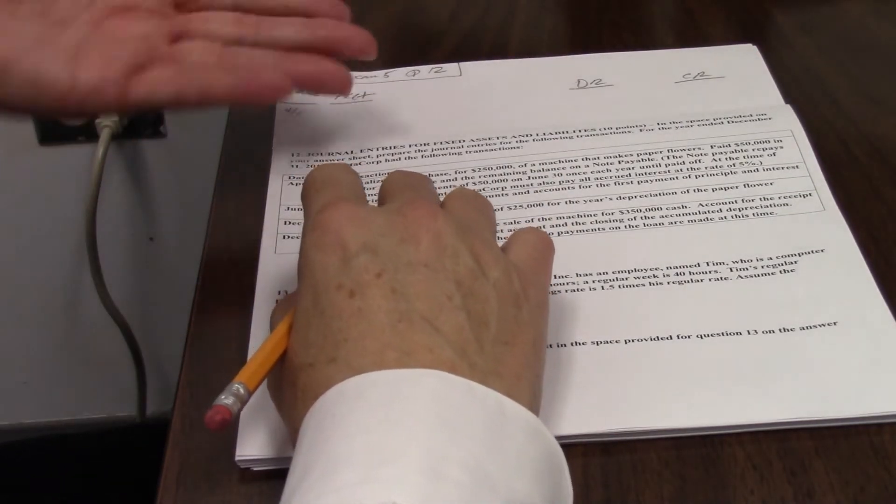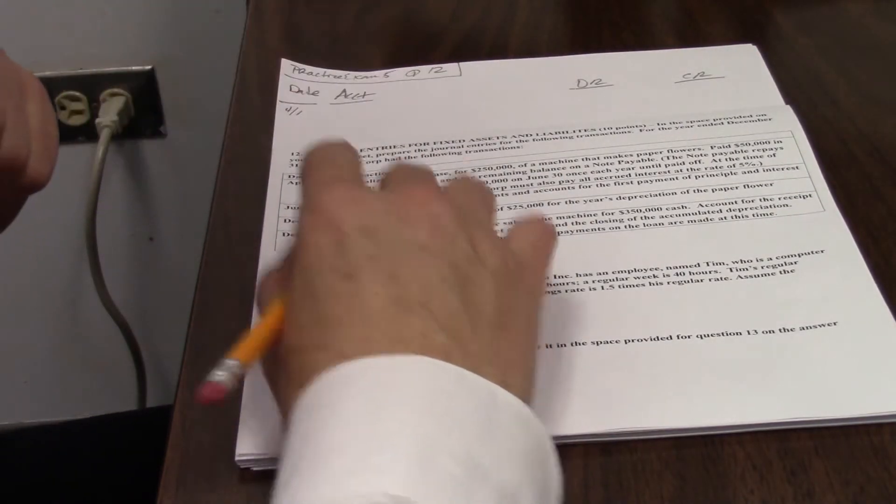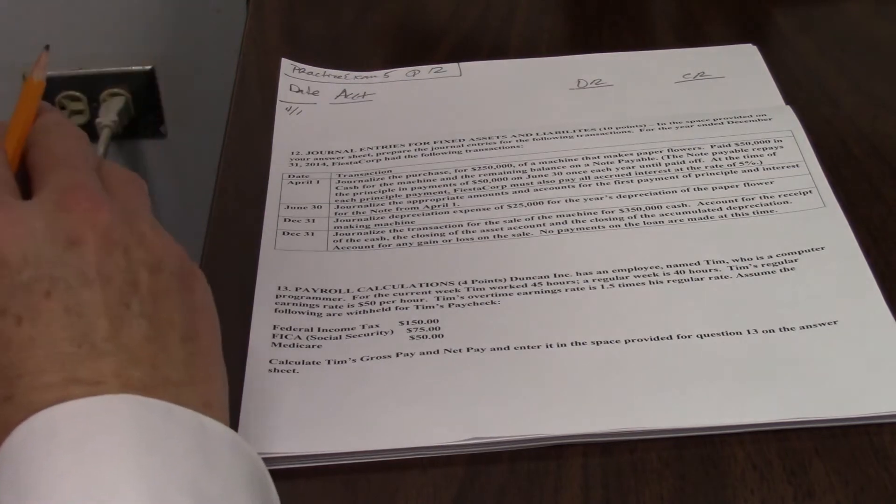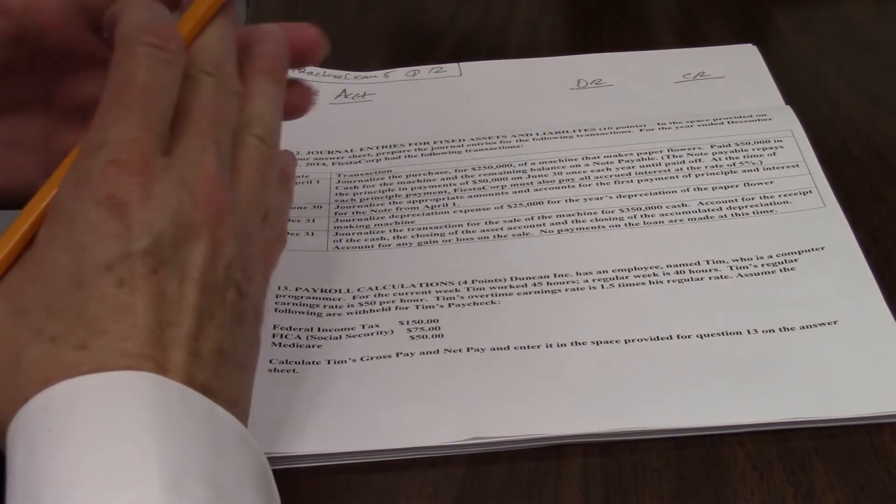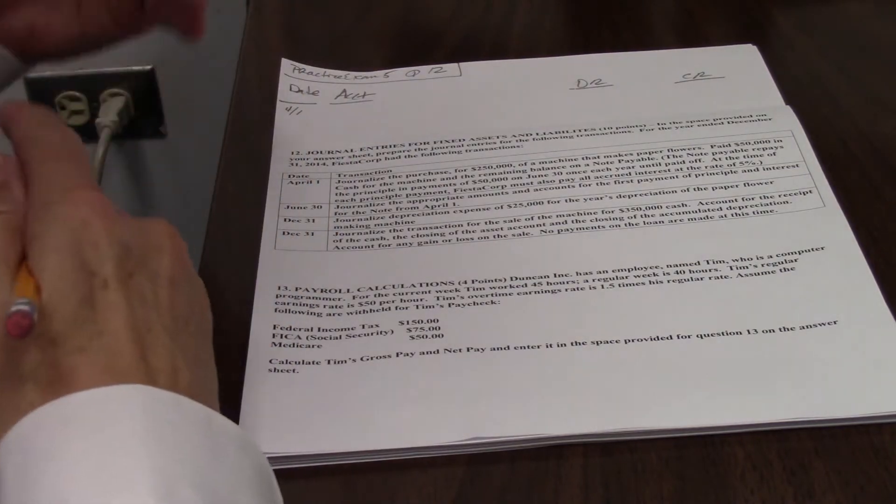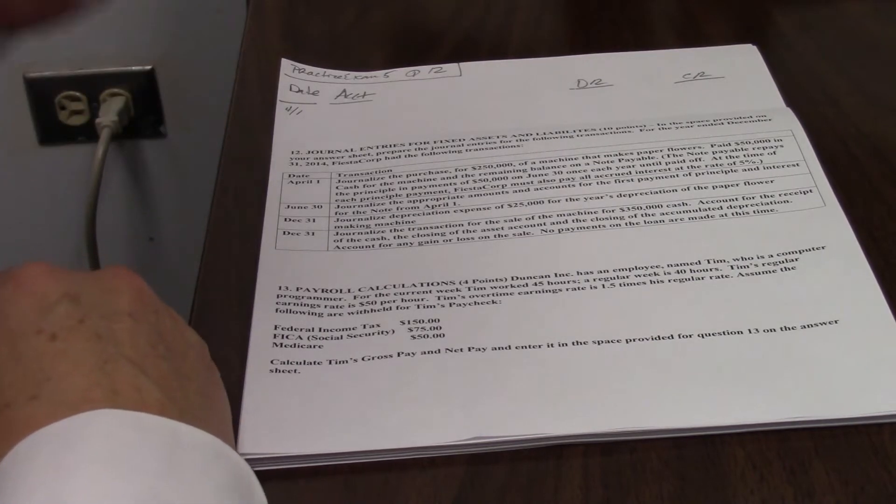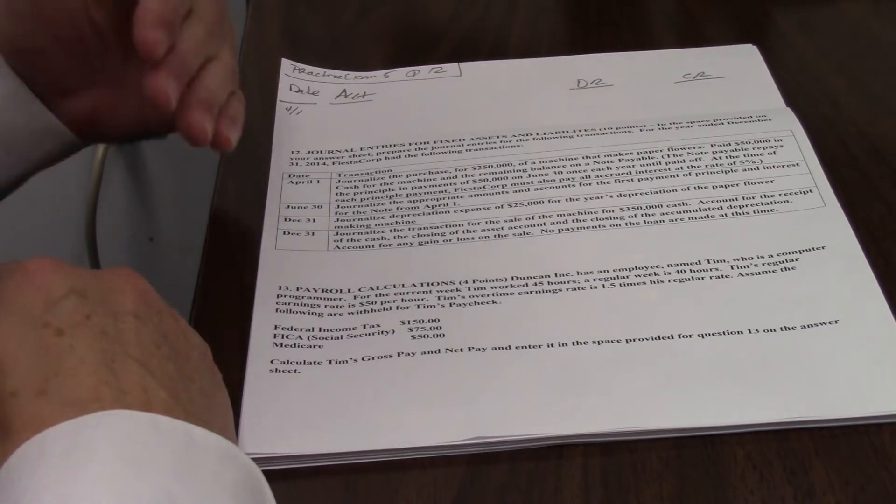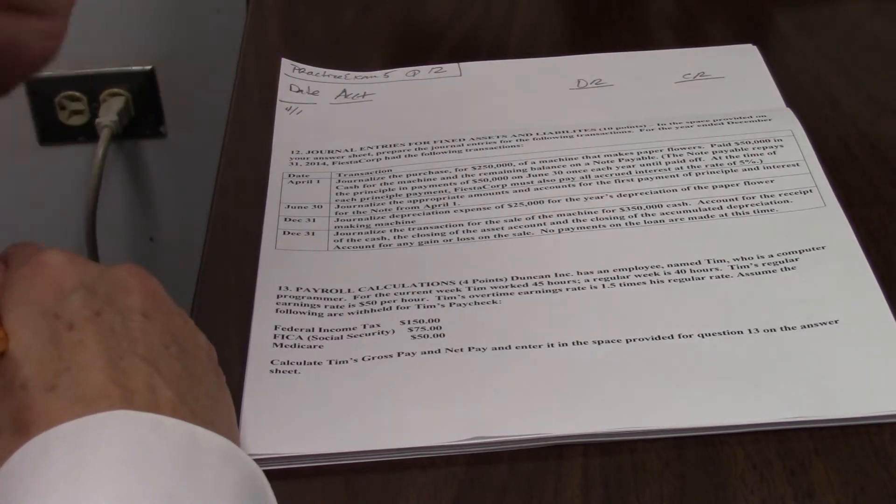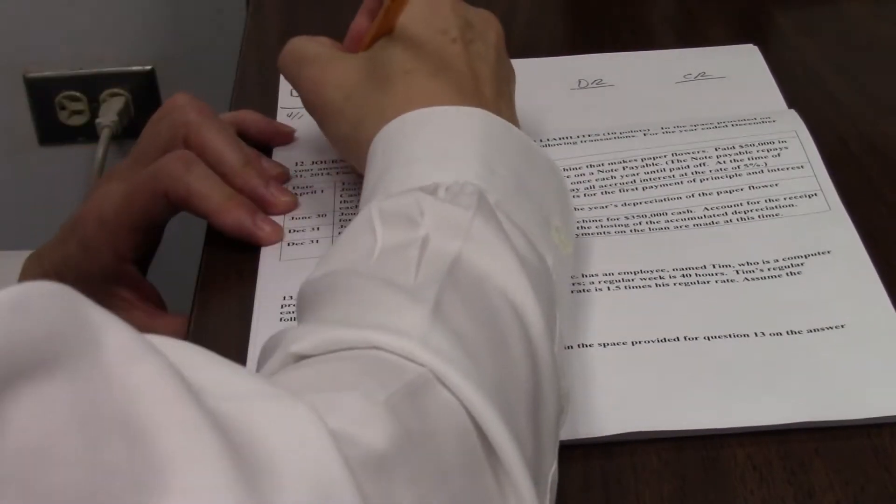So when you do a transaction, you have to analyze it and think about what accounts are affected. We've purchased a machine, that's an asset we're getting in. Assets increase with debits. Always. If you're increasing an asset, that would be a debit. A machine is most certainly an asset. So there's our debit, $250,000 new machine.